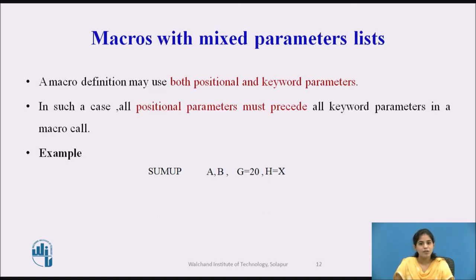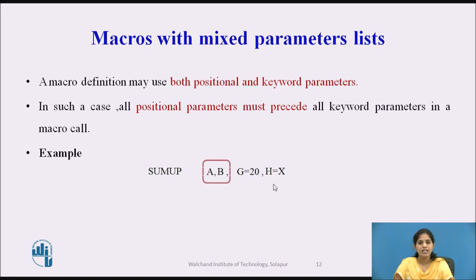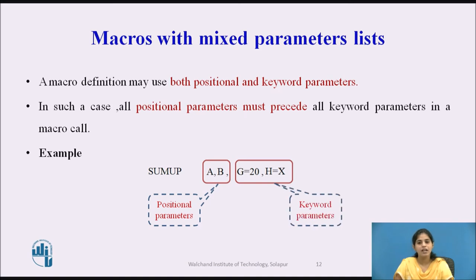The next type is macros with a mixed parameter list. A macro definition may use both positional and keyword parameters. In such a case, all positional parameters must precede all keyword parameters. For example, the macro SUM_UP has parameters A, B (positional), G=20, and H=X (keyword parameters).